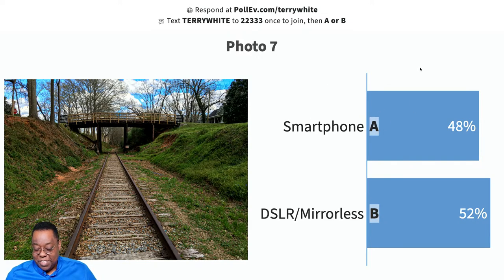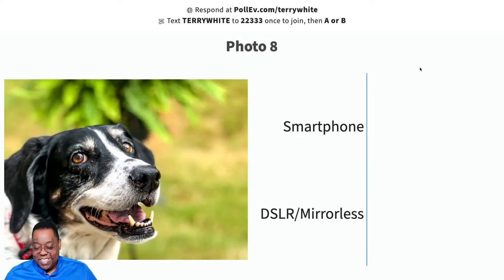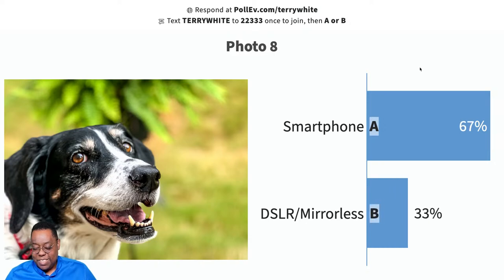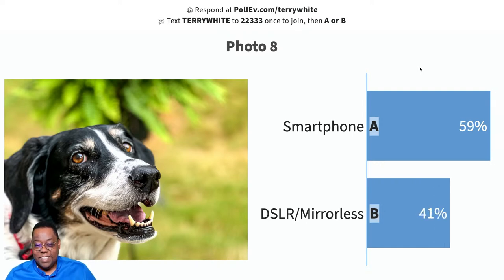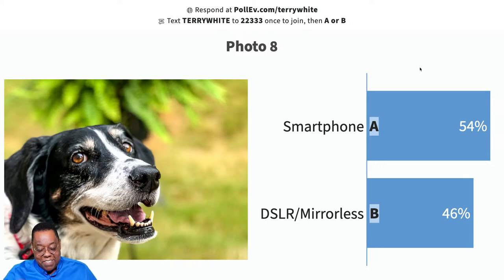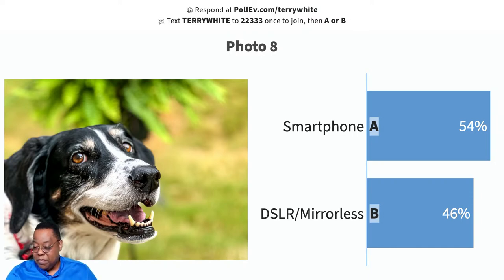Almost done, folks — probably should have only done eight photos. Photo number eight — this is Lisa, my young puppy, going to be eight years old this weekend. Look at that shallow depth of field — trying to drop hints. You can see every little hair, all of her fur, all of her mane. Lock this one in: 54% smartphone versus 46% DSLR.